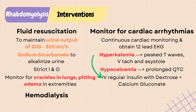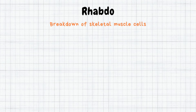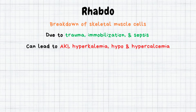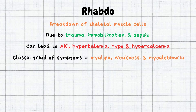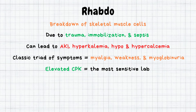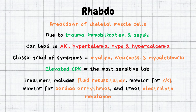Calcium should be used with caution as rhabdo is already associated with elevated calcium levels. Hemodialysis may be needed for severe rhabdo with severe kidney injury. In summary, rhabdo is the breakdown of skeletal muscle cells due to trauma, immobilization, and sepsis. It can lead to acute kidney injury, hyperkalemia, and hypo- and hypercalcemia. The classic triad of symptoms is myalgia, weakness, and myoglobinuria. The most sensitive lab is elevated CPK. Treatment includes fluid resuscitation, monitoring for AKI, cardiac arrhythmias, and treating electrolyte imbalances.